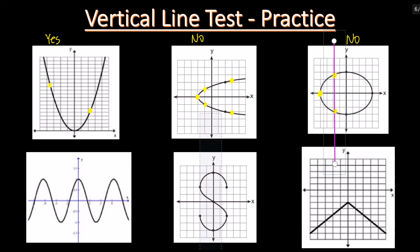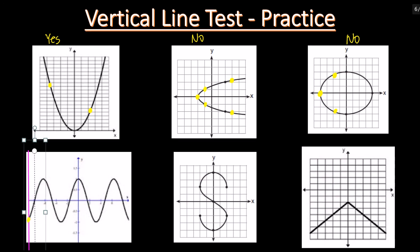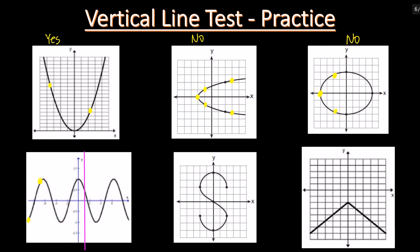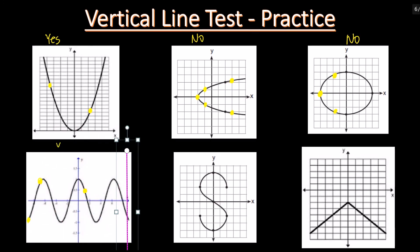Let's move on to the next graph. Place the vertical line at the left side — there is one intersection. Moving from left to right, there is only one intersection for any value of x, so it's a function.